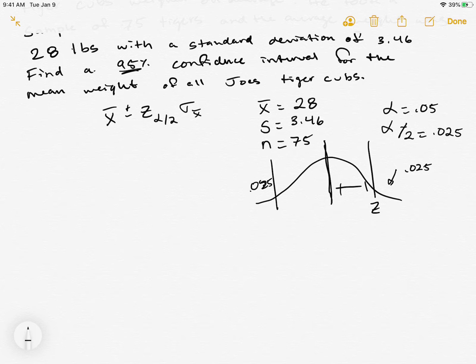Ours goes from zero to whatever, so we know 0.5 is on the right side of the curve. We're going to do 0.5 minus 0.025 which is 0.475. This is the value that we look up inside of the table.